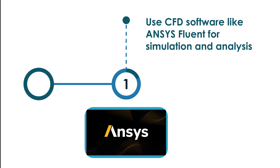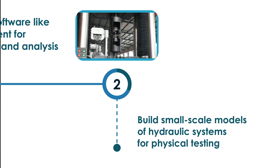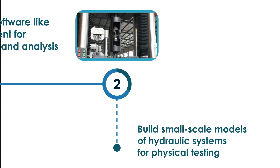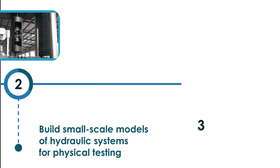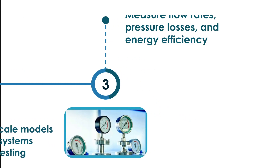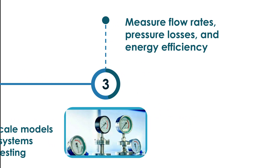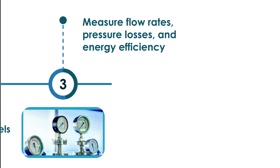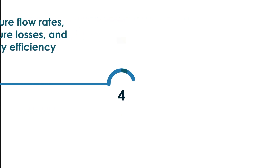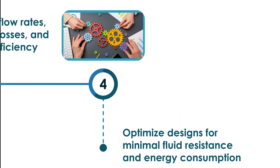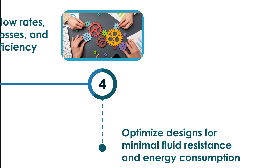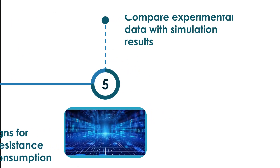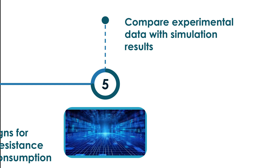For prototype development, use CFD software like ANSYS Fluent for simulation and analysis. Build small-scale models of hydraulic systems for physical testing. Measure flow rates, pressure losses and energy efficiency. Optimize designs for minimal fluid resistance and energy consumption. Compare experimental data with simulation results.